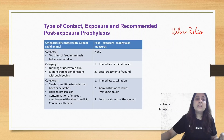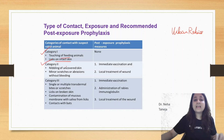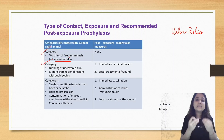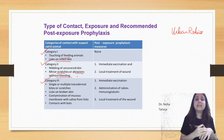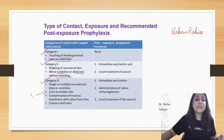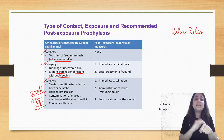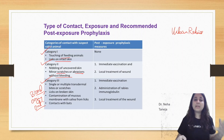To decide the treatment, we have to see the category of the wound. Category one wound: touching or feeding animals, or licks on intact skin — the skin is intact. Category two: nibbling on uncovered skin, minor scratches or abrasions but without bleeding — no bleeding in category two. Category three wound: single bite or multiple transdermal bites or scratches with blood oozing out — that is very important.